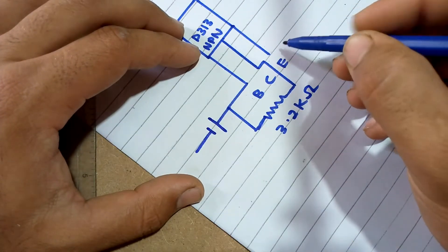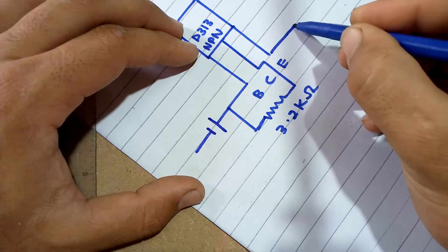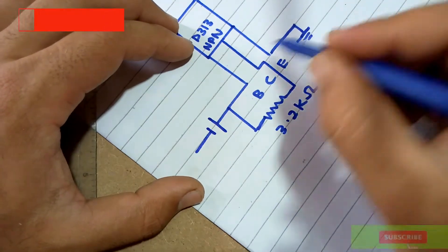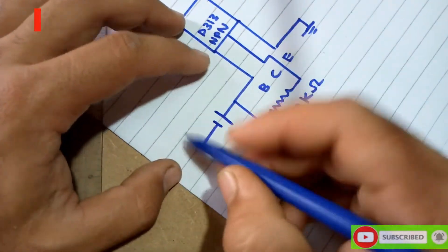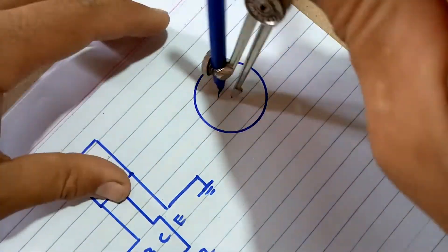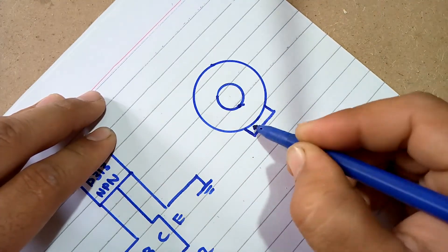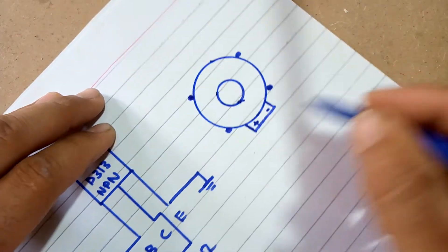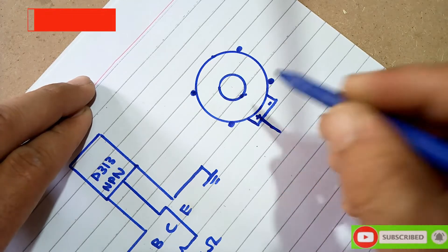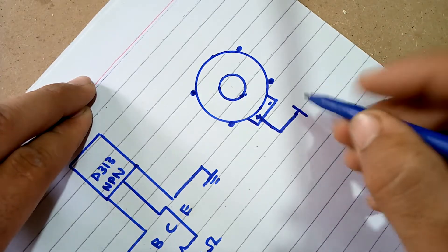The emitter is common in this case, so it is the ground. Connect the audio jack, then connect the base end to the battery.